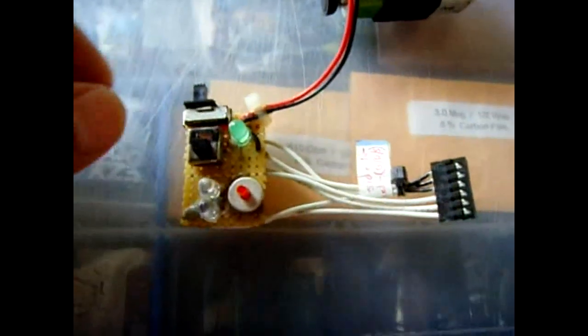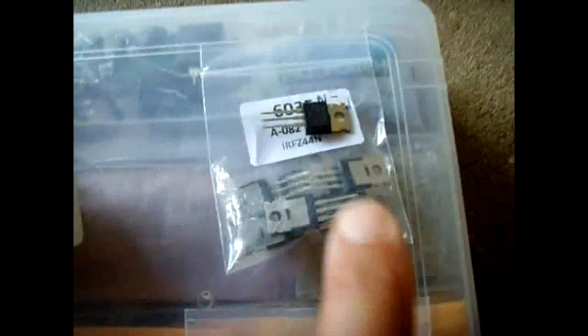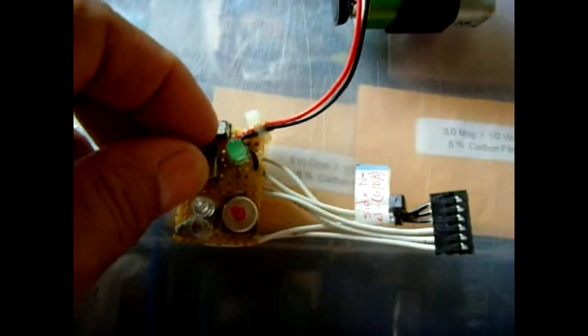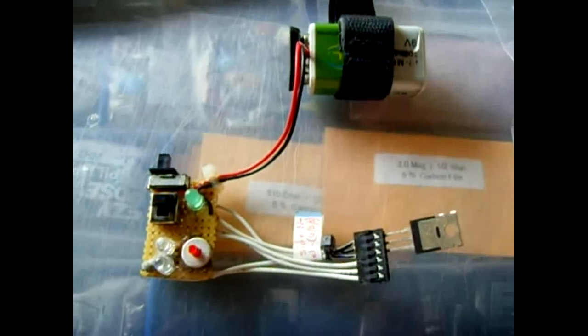So I'm going to take one of these right here. That's an N-channel, it's an IRF Z44, and this is a P-channel. So I'll be switching this over to N and I'm going to connect it right here.